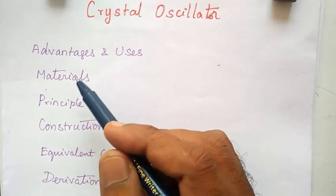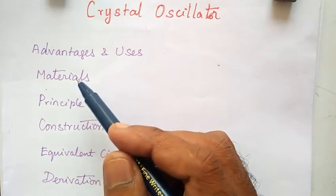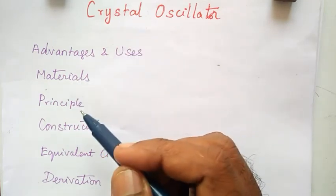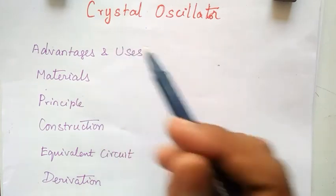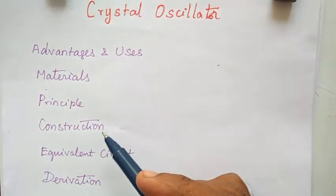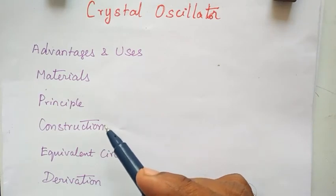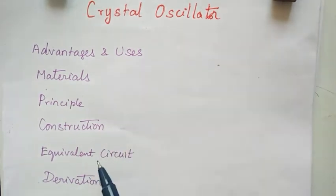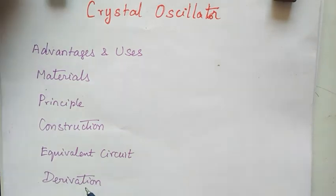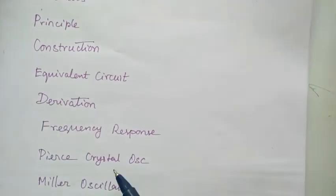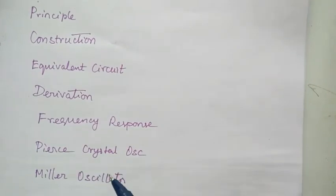Second, what types of materials are used as crystals. Third, the principle of operation — how the crystal oscillator works. Fourth, the construction — how to construct a circuit using the crystal oscillator. Then the equivalent circuit diagram followed by derivation, then frequency response, and finally two types of oscillators are discussed.